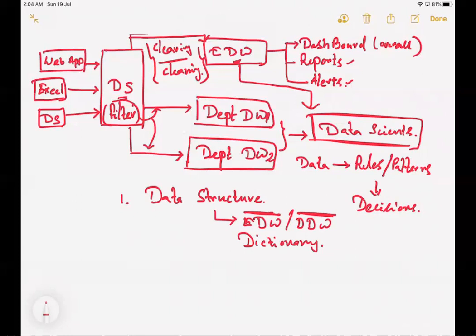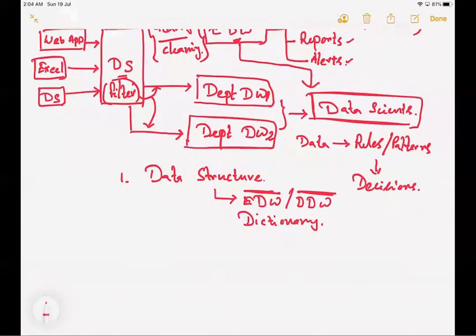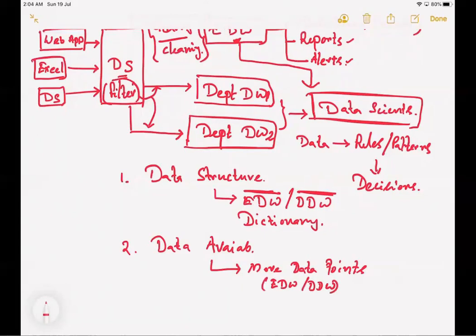Moving to the second component, which is data availability. What is the problem with this data availability? Assume that at some point of time, the data scientists want some more data points which is not collected in the enterprise data warehouse or departmental data warehouse.